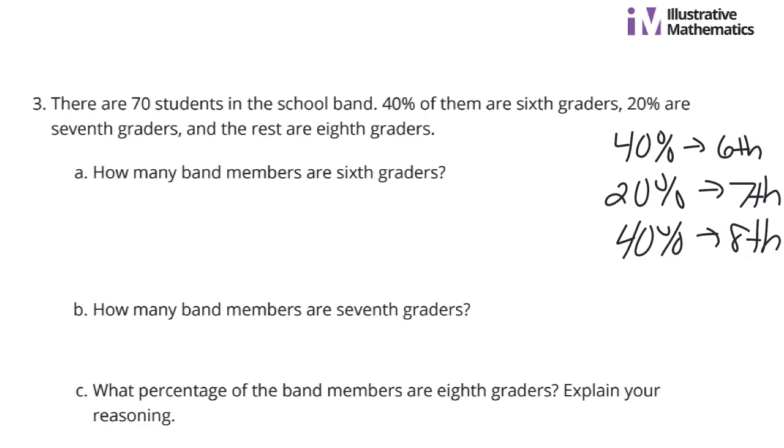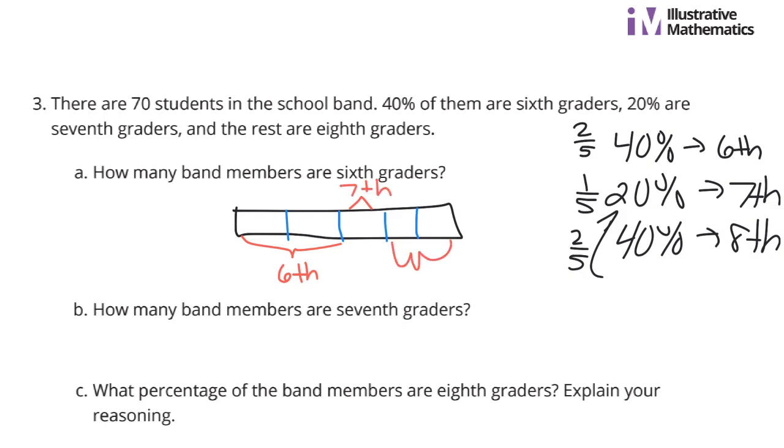How many band members are sixth graders? Well, if we break these now using our smallest unit as 20%, 20% are equivalent to one-fifth. This would be for 40% two-fifths, and this other 40% would be another two-fifths. So if we break this diagram into fifths, somewhat equal, our first two-fifths here are going to be sixth grade. Our next one-fifth is going to be seventh grade. And our last two-fifths here is going to be eighth grade.